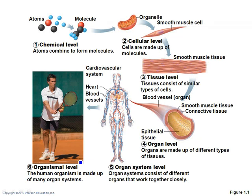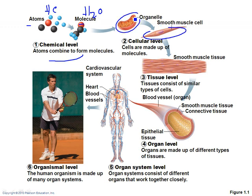In your book, you'll see a figure showing this, and on your exam there'll be a question asking you to order the organization from least to most complex, or most complex to least. So just know: the chemical level is made up of atoms and molecules — hydrogen, carbon; molecules like water. Then the cellular level with organelles, then tissue, then organ, then organ system, then organism — least complex to most complex.